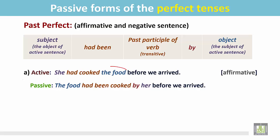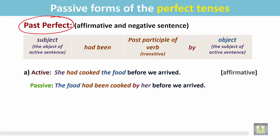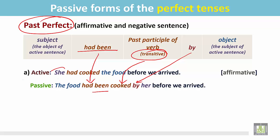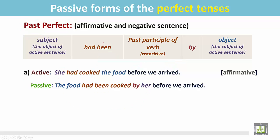In the passive form, the object becomes the subject. 'The food' is the subject here in the passive form. For the past perfect, we use the auxiliary verb 'had' and then 'been.' The transitive verb is in the past participle form. The preposition 'by' follows, and the subject of the active sentence becomes the object in the passive: 'The food had been cooked by her before we arrived.'